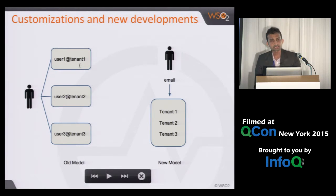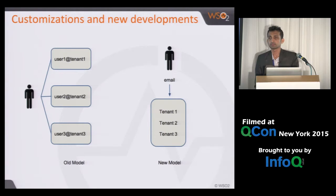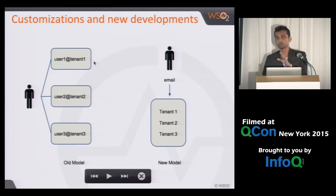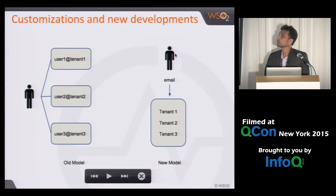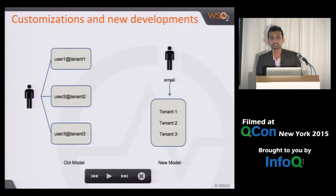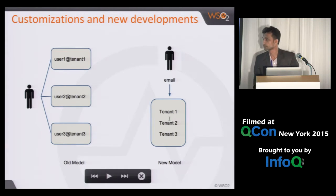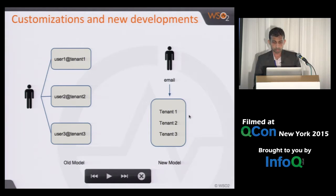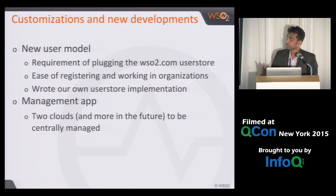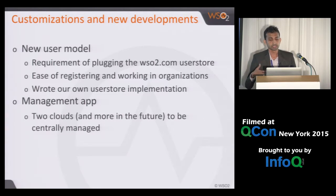We realized a user should be able to sign in to the cloud using their email — like most cloud services today. We needed to let them sign in with email and then let them use whichever organizations they want to work in. That was the new model we wanted. Because of that, we had to come up with this new user model, and we had to implement a custom user store. The WSO2 codebase provides extension points for us to implement our own user store.